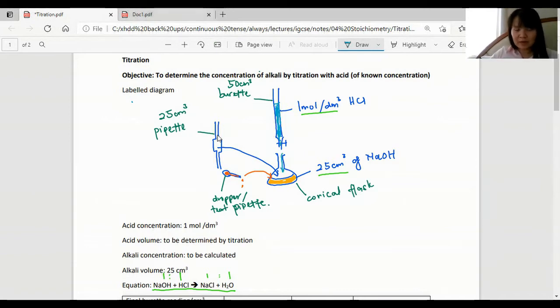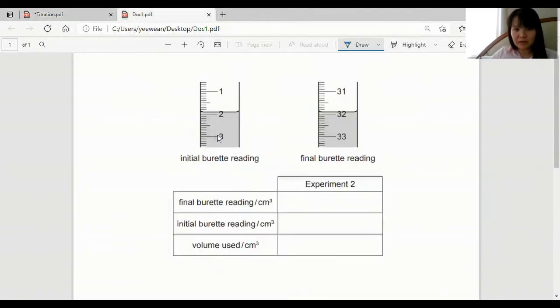So we might get a question like this. We need to read the reading on the burette. The burette reading runs from the top to the bottom. So 1 is at the top and 50 down there means that it's empty. So zero means full.